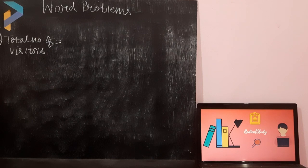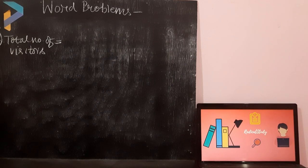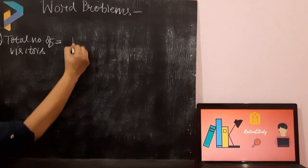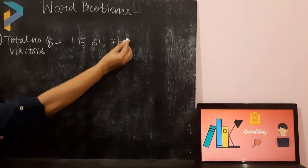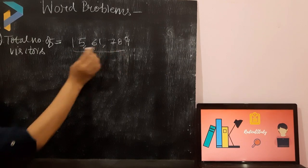I am going to explain the question to you in Hindi. Ek event hai, jisme visitors gaye. The total number of visitors were who attended that event 15,61,789. This much number of people visited that event, they attended that event.